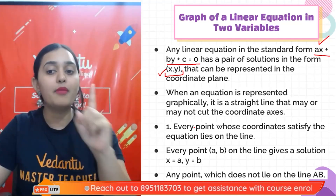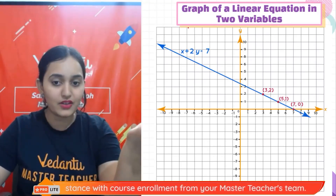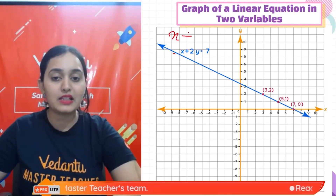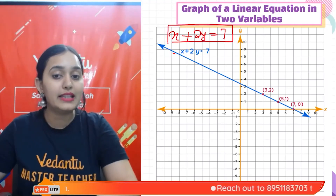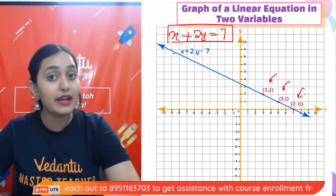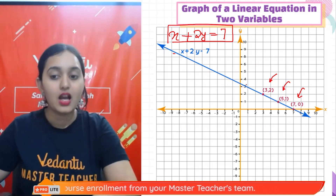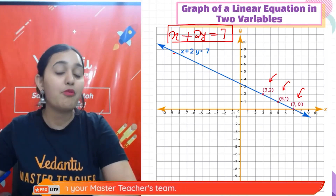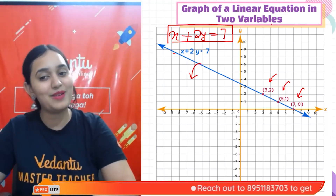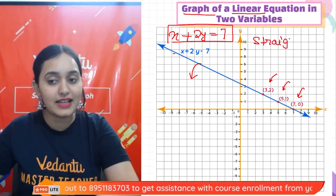After plotting the points, just join them to form the straight line graph. For example, for the equation x + 2y = 7, the coordinates that satisfy the equation are (3, 2), (5, 1), and (7, 0). We plot these points on the graph and join them to obtain the straight line graph of x + 2y = 7. Remember: the graph of a linear equation is always a straight line.